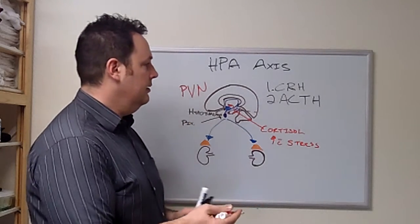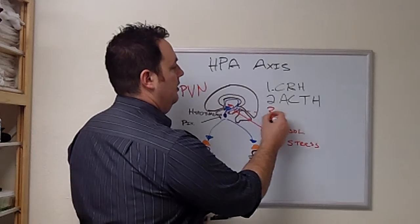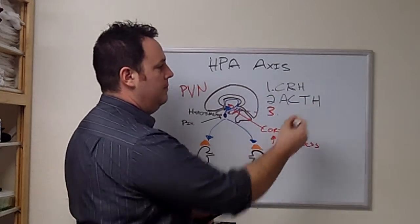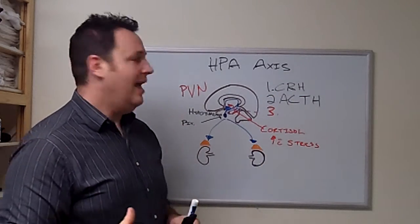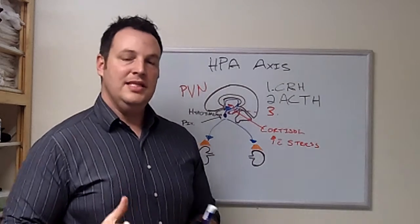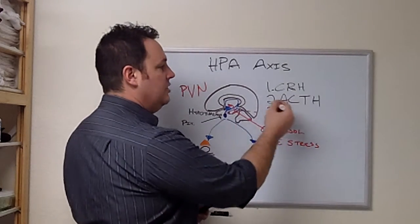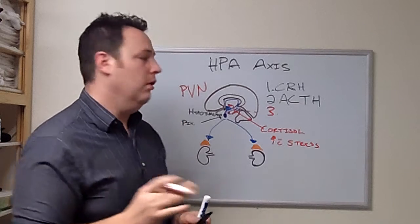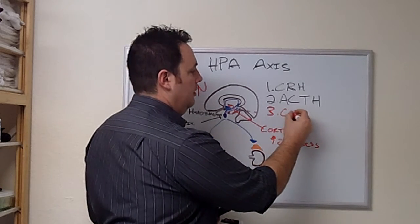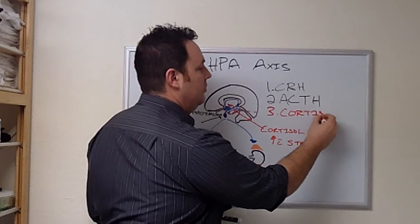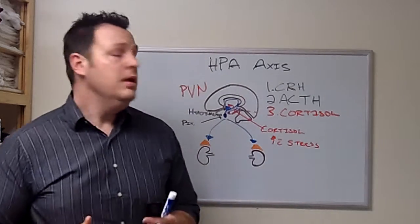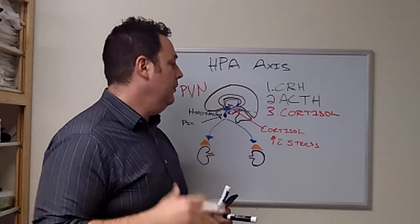So back to this, we have corticotrophic-releasing hormone released by the hypothalamus. This is going to act on the pituitary. The pituitary secretes ACTH, or adrenocorticotrophic-releasing hormone. This now acts on the adrenal glands to produce cortisol.